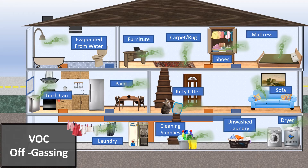VOC off-gassing in the home. Starting in the top left corner: we can have VOCs evaporated from our shower water, emitted from furniture, carpet, shoes, and our mattress. We can have VOCs emitted from the trash can, paint, kitty litter, and the sofa. Our laundry emits VOCs — it doesn't all get washed out when we do laundry. Our cleaning supplies clearly emit VOCs, unwashed laundry emits VOCs, and our dryer emits VOCs.